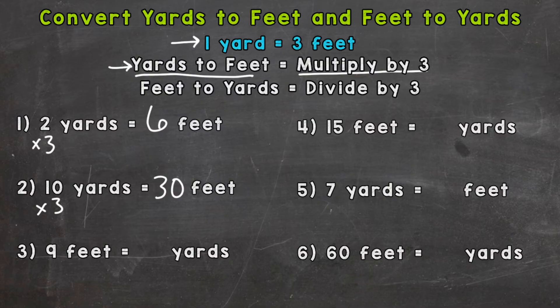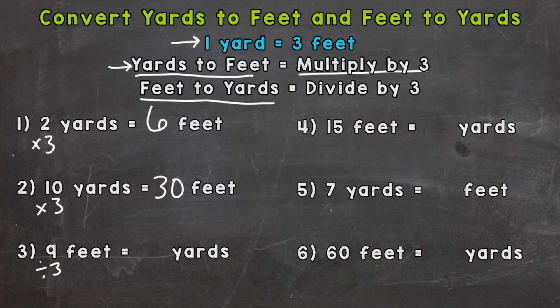Number three, we're going the opposite way — from feet to yards. We have nine feet and we're splitting that nine feet into groups of three. Each one of those groups of three is a yard. So we need to take that nine feet and divide it into groups of three. Nine divided by three gives us three yards.